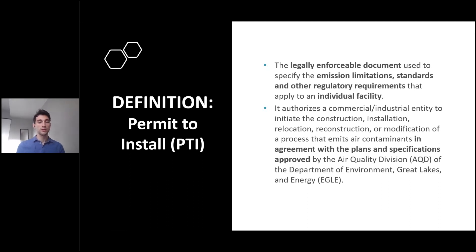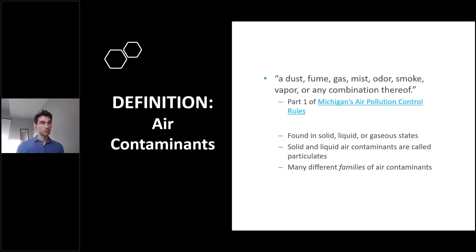There's another term embedded in this definition: air contaminant. An air contaminant is a dust, fume, gas, mist, odor, smoke, vapor, or any combination of those. It's defined in Part 1 of the Michigan Air Pollution Control Rules, where you can find most of these definitions. Air contaminants can be found in solid and liquid states, referred to as particulates, and many can also be in a gaseous state.